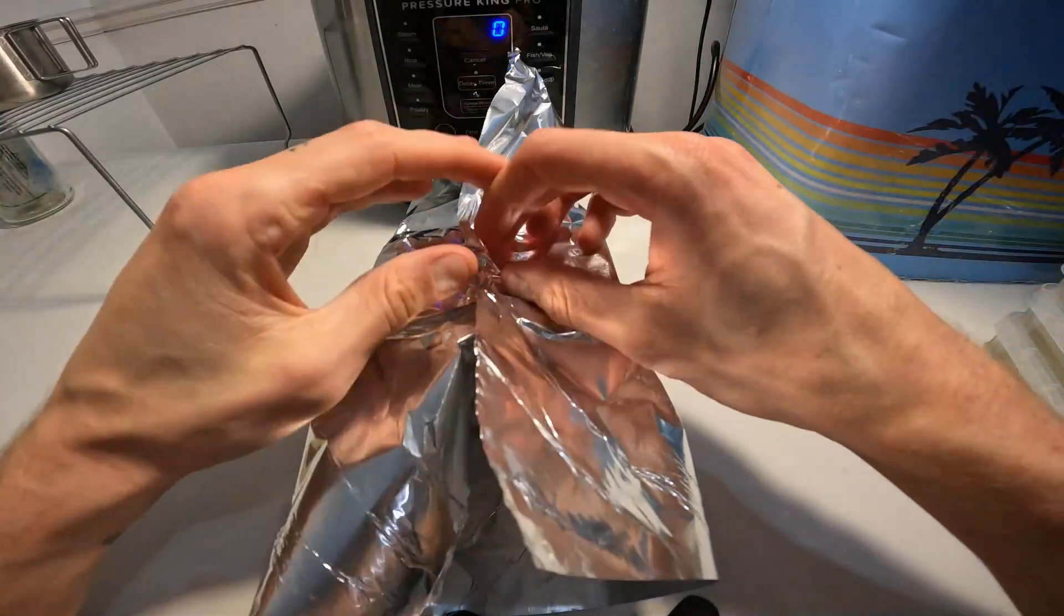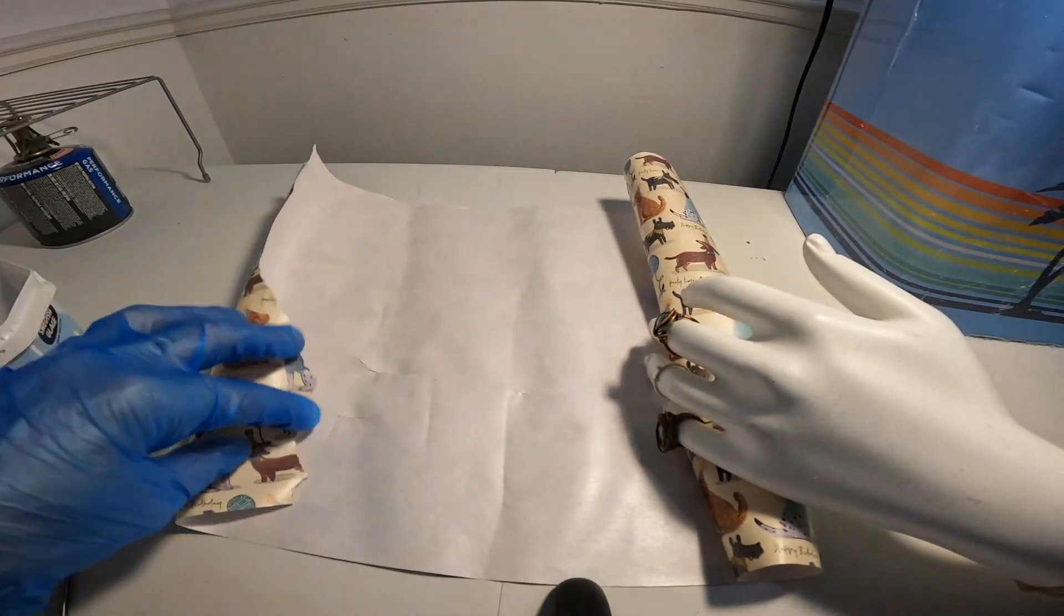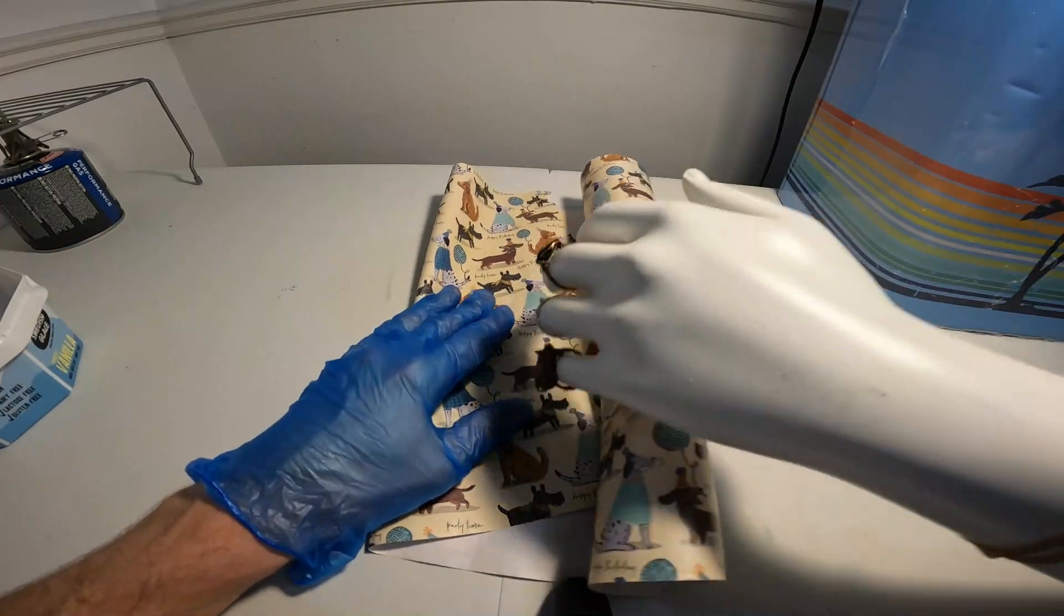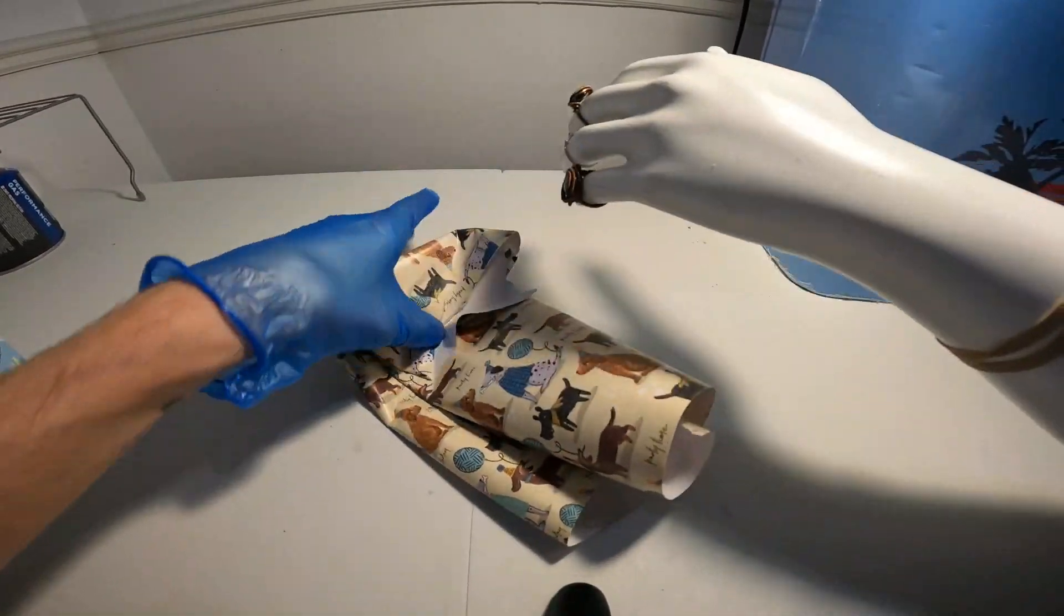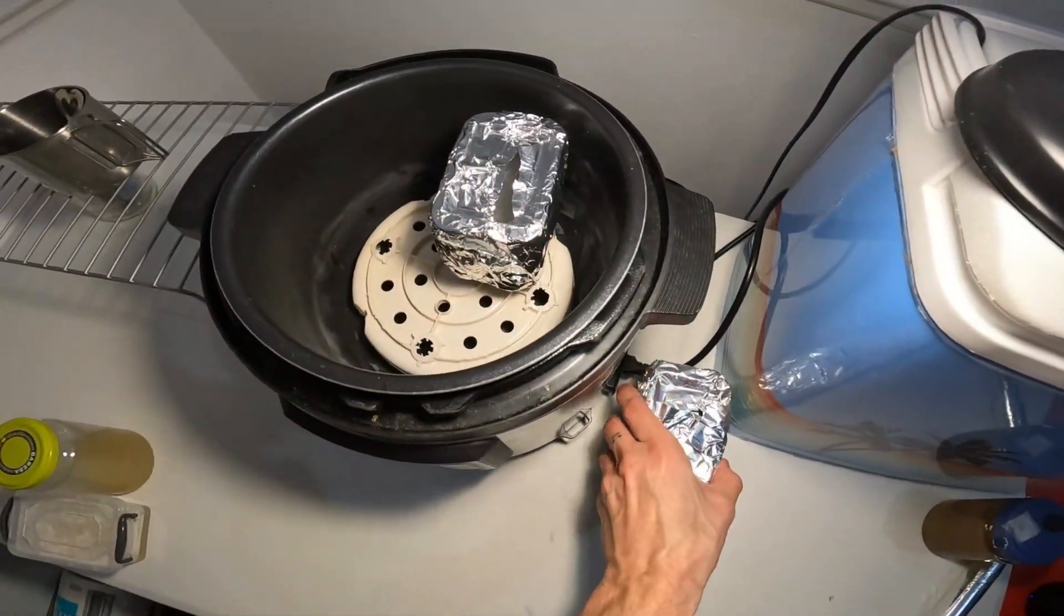I used foil to protect the pots, wrapping them at the same standard that I gift wrap items. Now that they're disguised as an Indian takeaway, they can go into the pressure cooker.